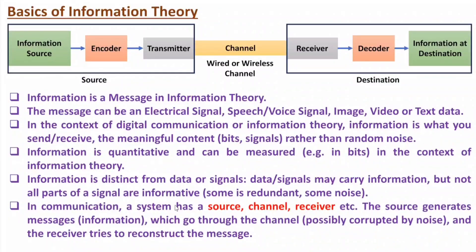In communication, a system has source, channel, and receiver. Source is generating a message which goes through the channel, possibly getting corrupted by noise. The receiver tries to reconstruct the message at the destination side. So information is a message — it can be electrical, speech, image, video, or text data — and we represent information in terms of bits.